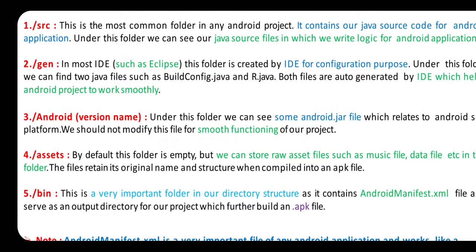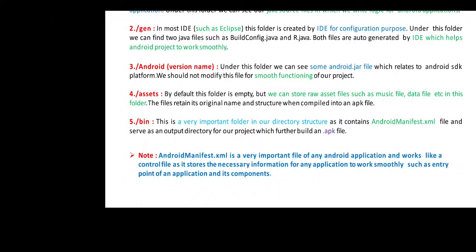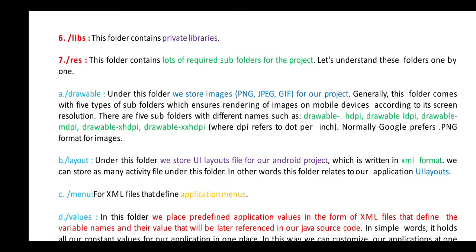Then Assets — by default this folder is empty, but we can store raw asset files such as music files, image files, data files, etc. This folder returns its original name and structure when compiled into a .apk file. BIN is a very important folder in our directory structure — it contains the Android manifest XML file and serves as an output directory for our project, which further builds the .apk file. Next is the Library folder — this folder contains private libraries. Then the Resource folder, which contains many required subfolders for the project.